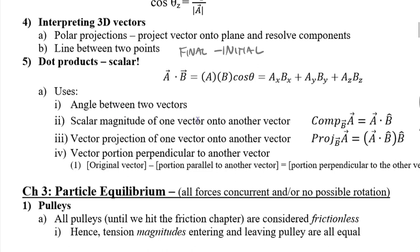Some uses of the dot product include finding angles between two vectors, which is more relevant for 3D than 2D problems. We also have two related quantities: the scalar component, written as comp_b(A), which gives the scalar magnitude of one vector along another, and the projection, written as proj_b(A), which gives a vector. The only difference between these equations is multiplying by the unit vector b-hat, which adds direction and makes it a vector projection.